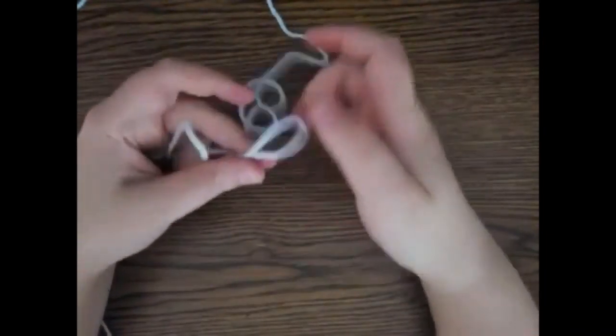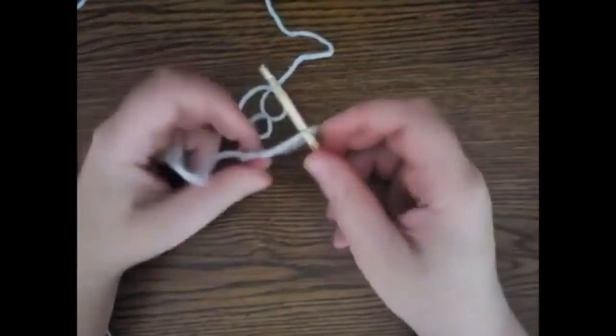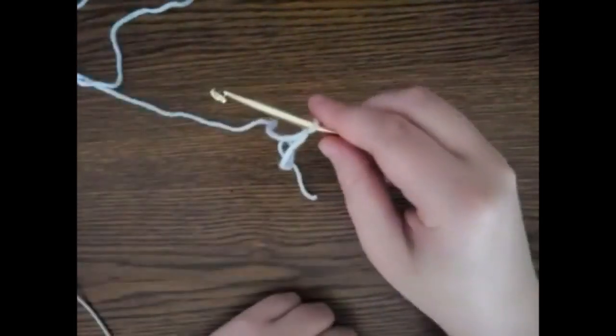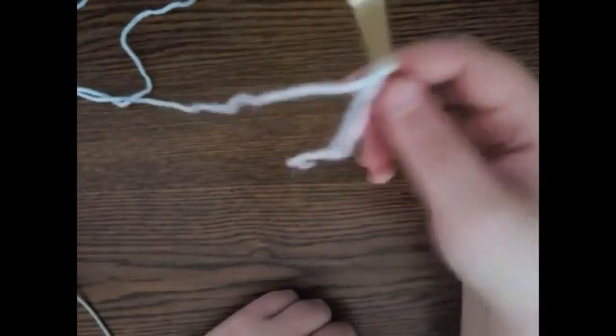If you do not know how to do this, you can learn by clicking the link in the description below. Once my slipknot is secured on the hook, I pick up my hook and hold the tail in my right hand.